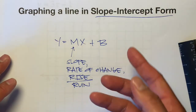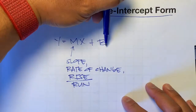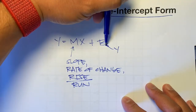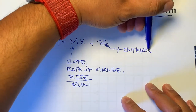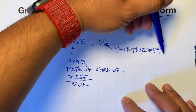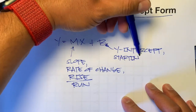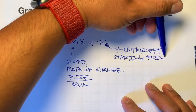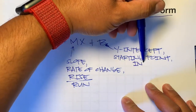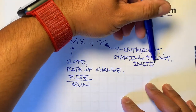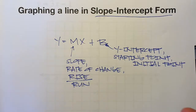The B, as you guessed it, if M represents the slope, then B represents the intercept — specifically the Y-intercept. You can also call it the starting point or the initial point.